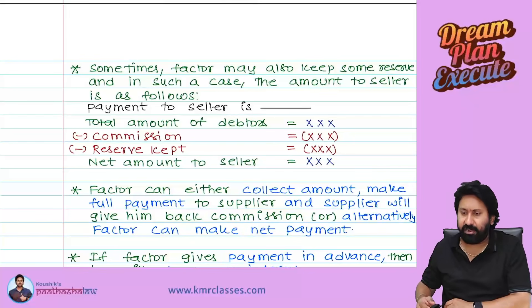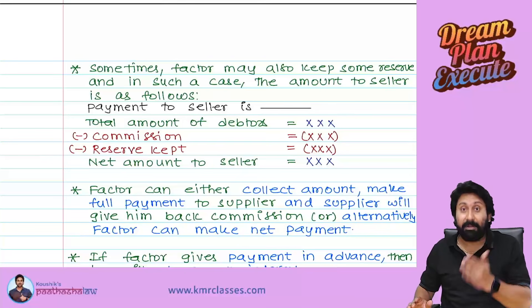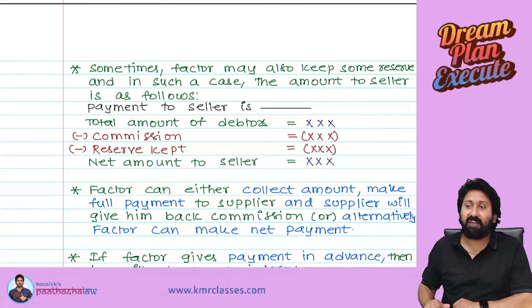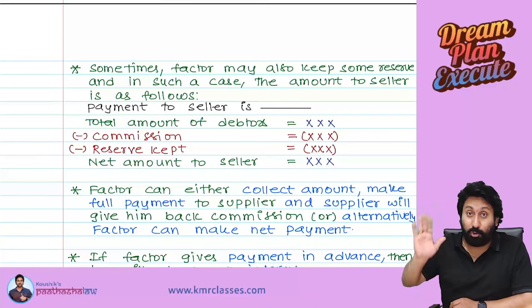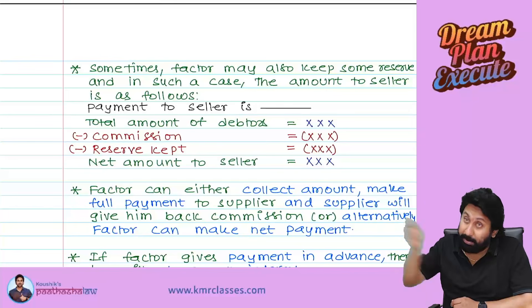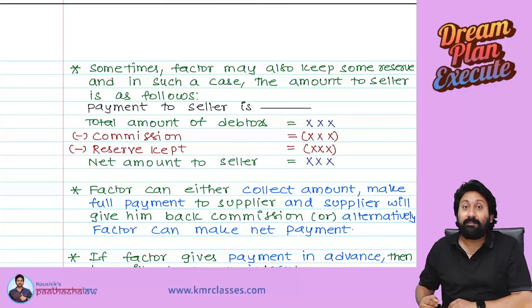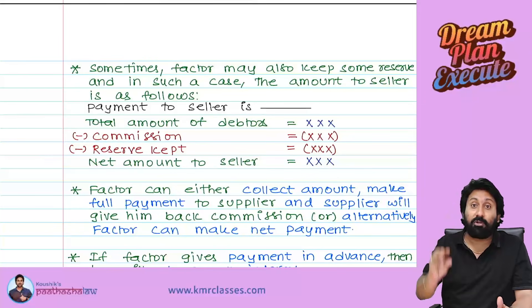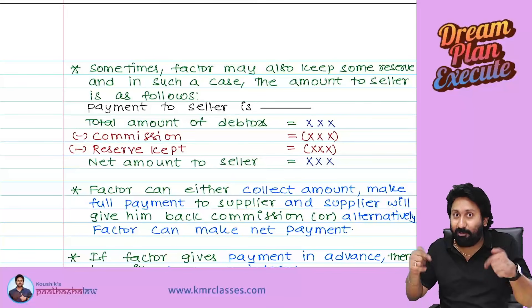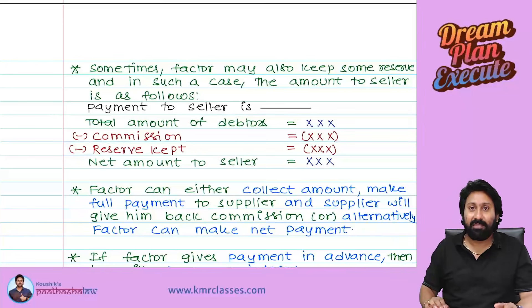The factor says: yes, we are experts, we take the risk of collection. The company asks: can you pay now instead of waiting 90 days? The factor says: fine, but I will not pay the entire five lakh — I will keep some amount as a reserve and pay the balance as an advance. So indirectly, you are getting a loan for the next three months — that is the concept of advance on debtors.